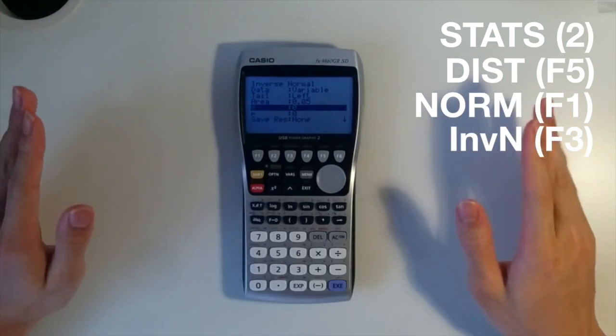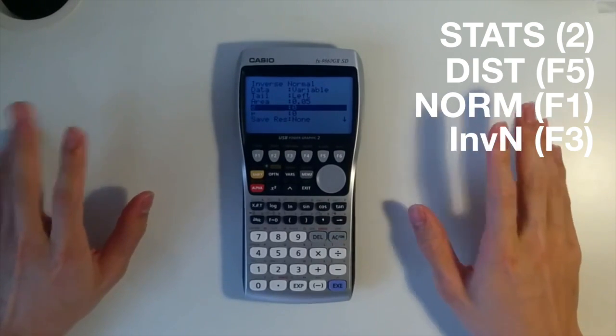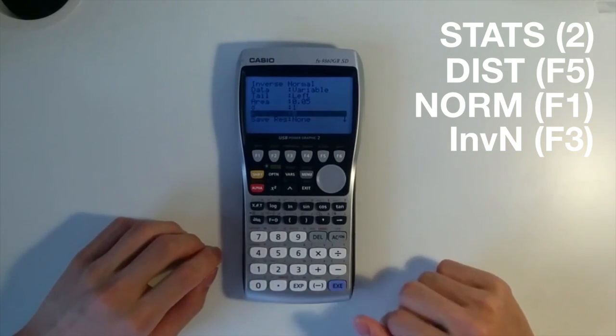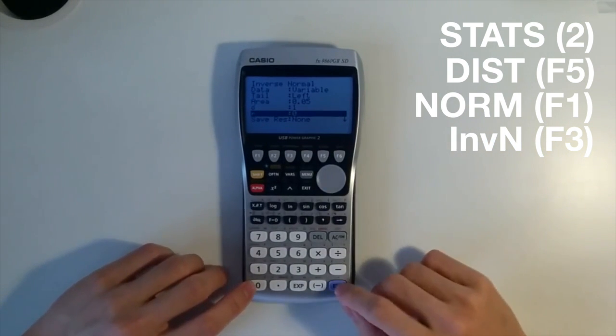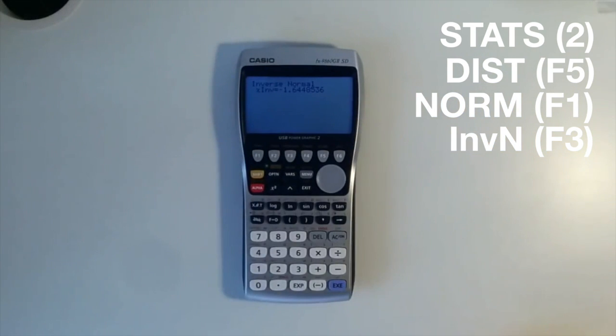Now here comes the interesting part. Even though we know the mean is 10kg, we don't know the standard deviation. So we have to use the standard normal distribution, which is 1 for the standard deviation and 0 for the mean. So here we have it, the answer for the z-score.